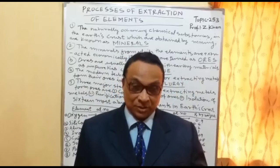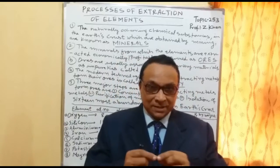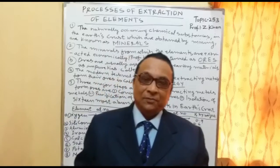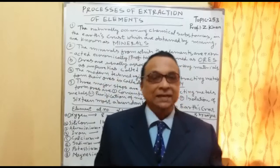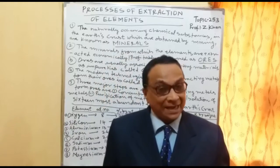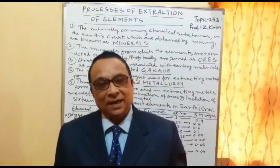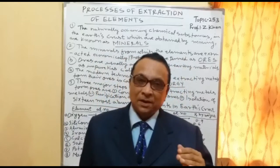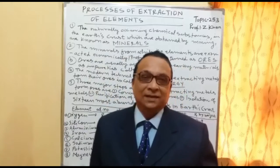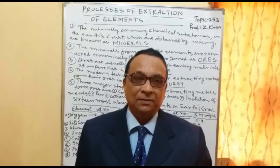Malleable means they can be hammered into a sheet. Ductile means they can be drawn into thin wire. They form luster means they have a shining color. These are the properties of metallic elements in the periodic table. They are also good conductors of heat and good conductors of electricity.